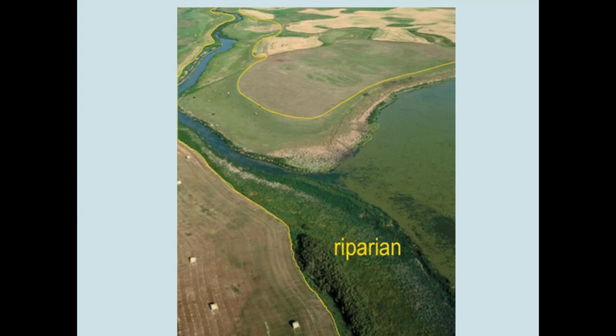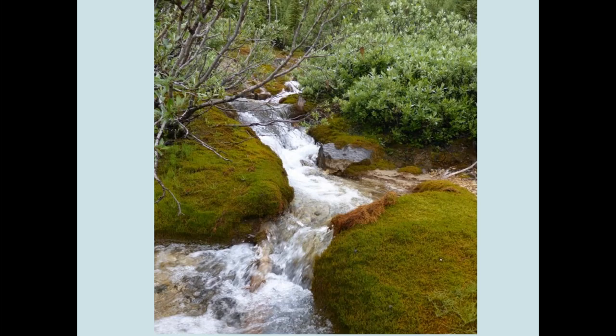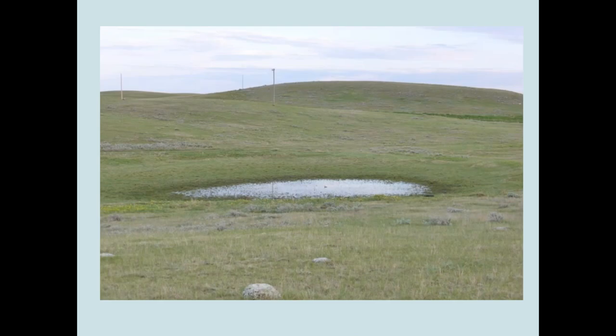Whether groundwater or surface water influenced, riparian areas tend to be more green, more lush, and more productive than the adjacent uplands. It is their close connection to the water table that increases their productivity. Riparian areas occupy as little as 2 and up to 5% of the settled portion of Alberta — essentially the white zone. It's a very small portion; however, they tend to be some of the more productive areas in our landscape. Their importance and significance is far larger than their small size would indicate.